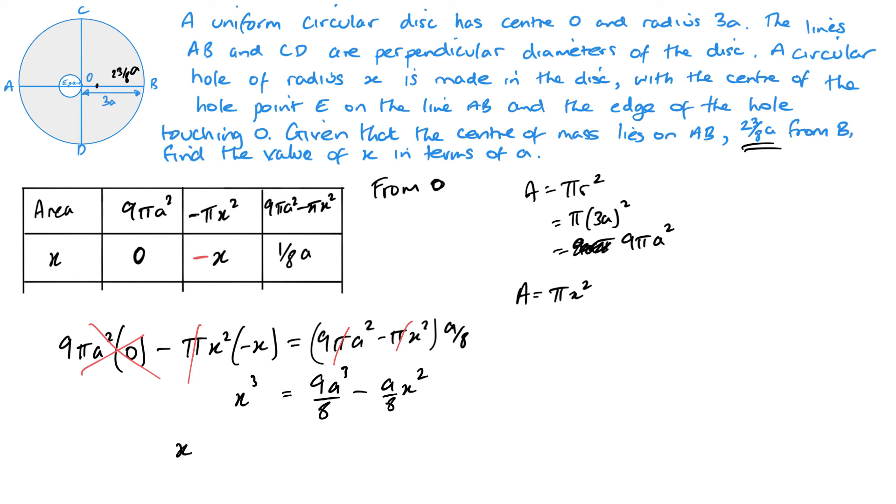That's going to give me a positive X cubed. I've got 9 A cubed over 8 minus A over 8 X squared. So X cubed plus A over 8 X squared minus 9 A cubed over 8 equals 0. Now, the next bit really kind of comes down to a bit of observation. If you don't spot this, this is where you're going to get stuck.